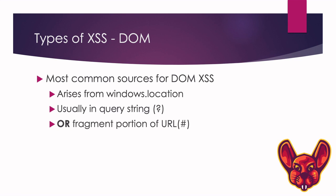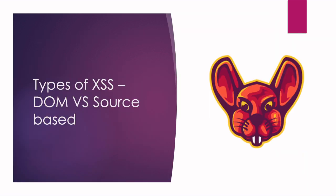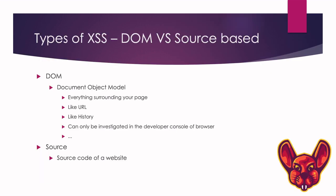The most common sources for DOM XSS come from window.location — your URL — usually in the query string where parameters occur, or in the fragment portion. The fragment, indicated by the hashtag sign, means that data never goes to the server; it's only read by the browser. This means reflected XSS is possible there, and if that data goes into a DOM sink, you have DOM-based XSS.